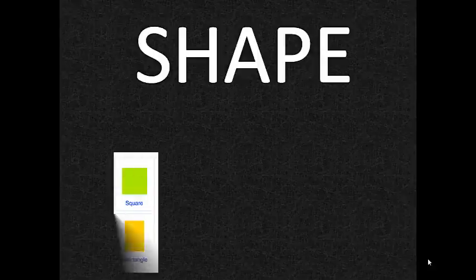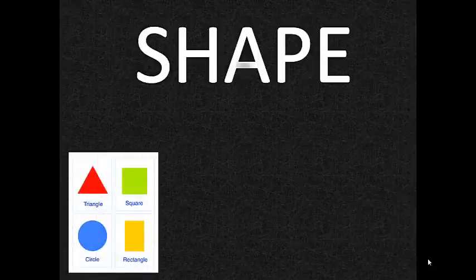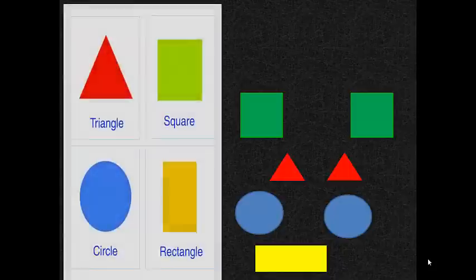Now let's sort by shape. We have squares, triangles, circles, and a rectangle.